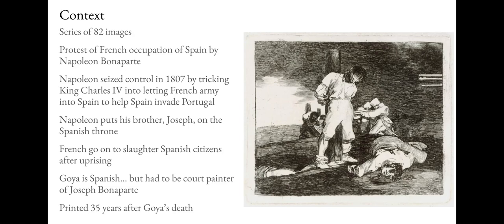Goya is witnessing all of this through the lens of being Spanish. But because he is an incredibly talented painter, he is appointed the court painter of Joseph Bonaparte — the French brother of Napoleon now ruling Goya's homeland of Spain. It's a tricky situation. He fulfills his role making art for Joseph Bonaparte, but hidden away privately, he is making art about this experience, biased toward Spain. These prints were published about 35 years after Goya's death, when family felt it was safe to publish his views.